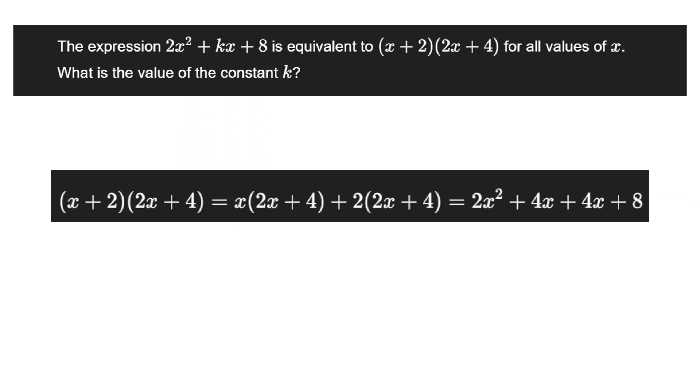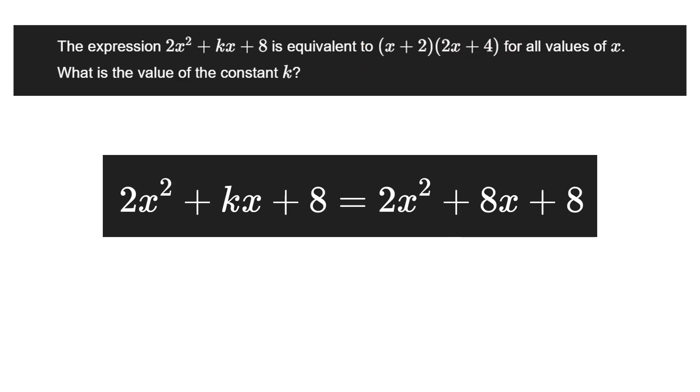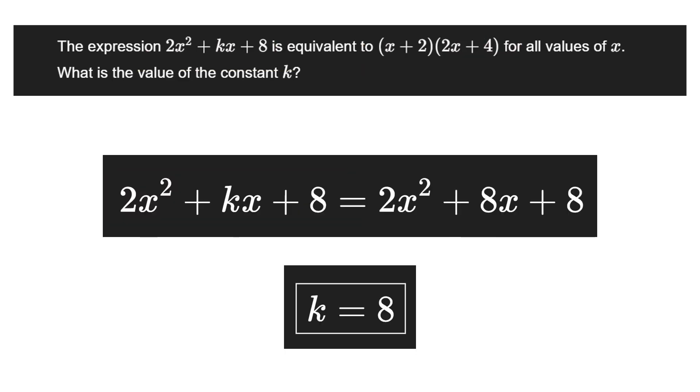What we first must do is foil the second part, which will give us this. Now we can compare this to the other equation and by observation k is equal to 8. That problem is really easy and while it can be considered a constant question, you should solve it instantly.